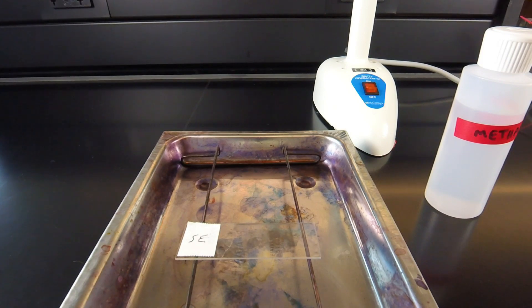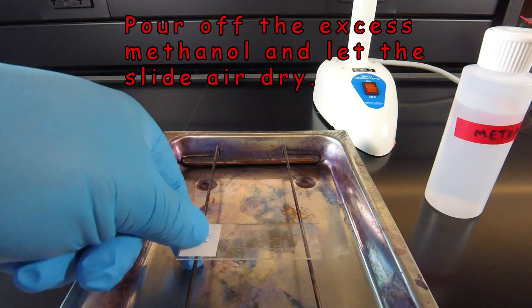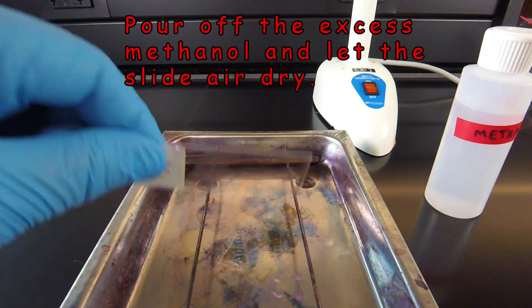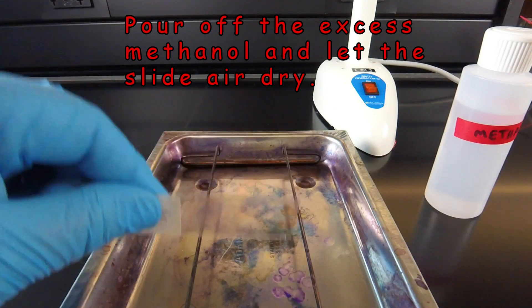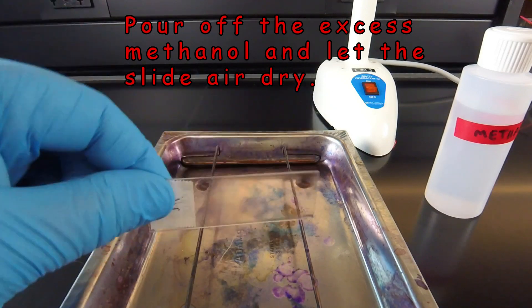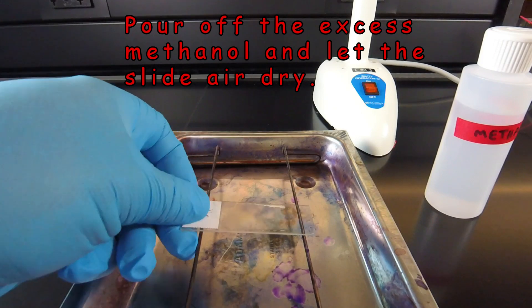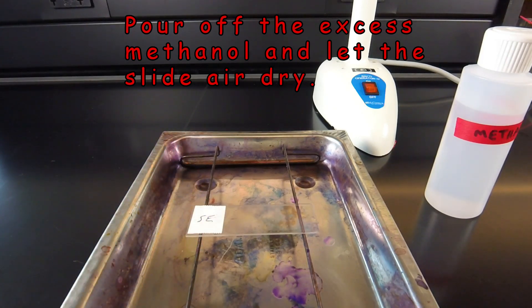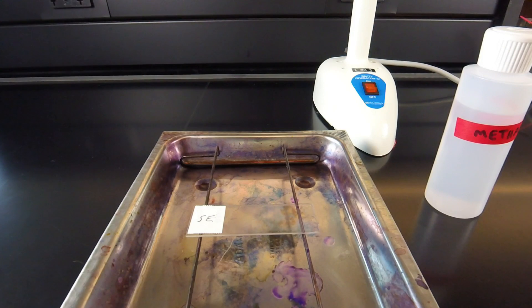Now that two minutes have gone by, all we do is pick up our slide. We're going to let the methanol drain off into the staining tray. And then we're going to put it back on the rack, and we have to let it completely air-dry. At that point, the slide will be ready for staining.